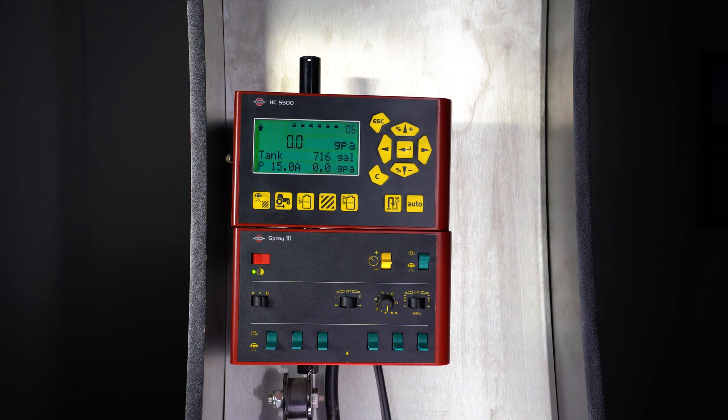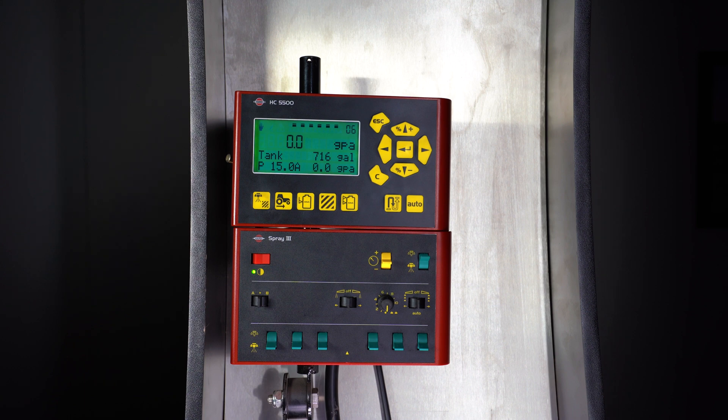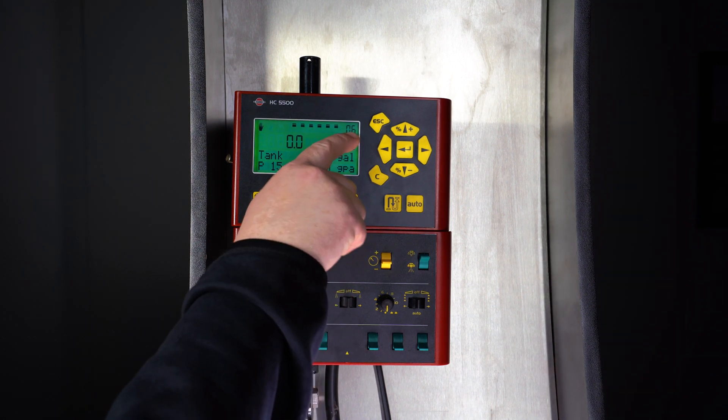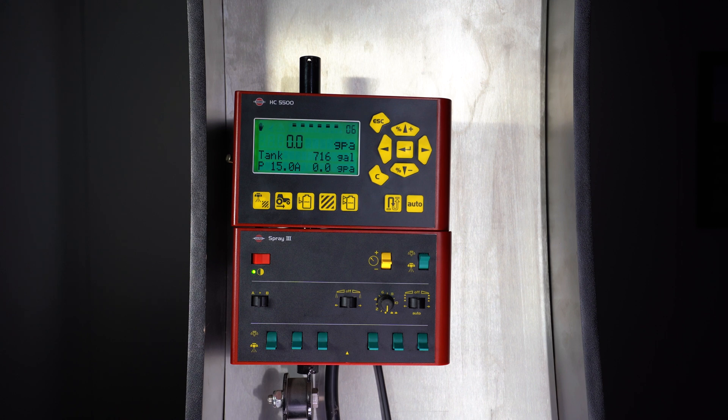The HC5500 has 98 registers or areas in its storage that you can save spray data. You can see which field you're in or which register you're in in the top right corner. In this case, we're in register number 6.